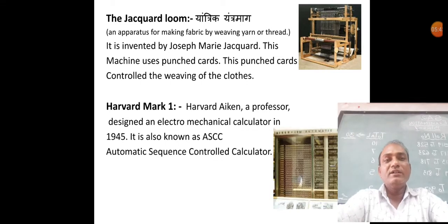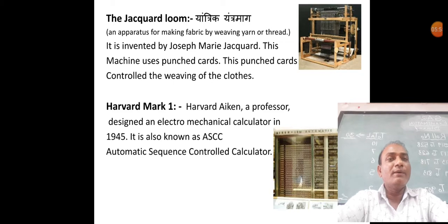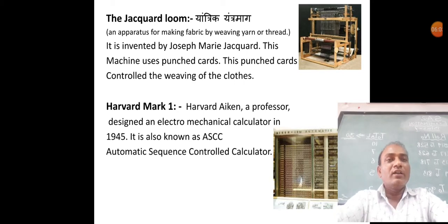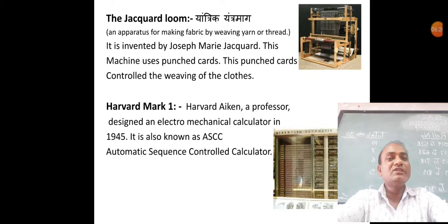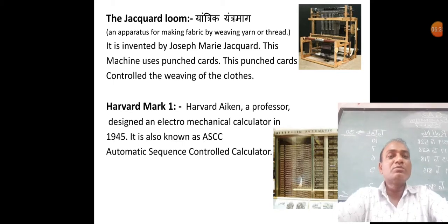The next computing device is the Harvard Mark I. A professor, Howard Aiken, designed an electromechanical calculator in 1945. It is also known as ASCC, which stands for Automatic Sequence Controlled Calculator. This device is used for sequential calculation.